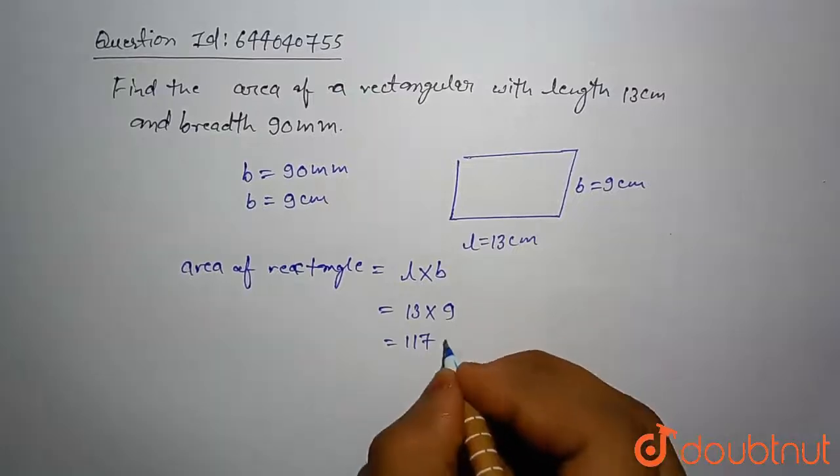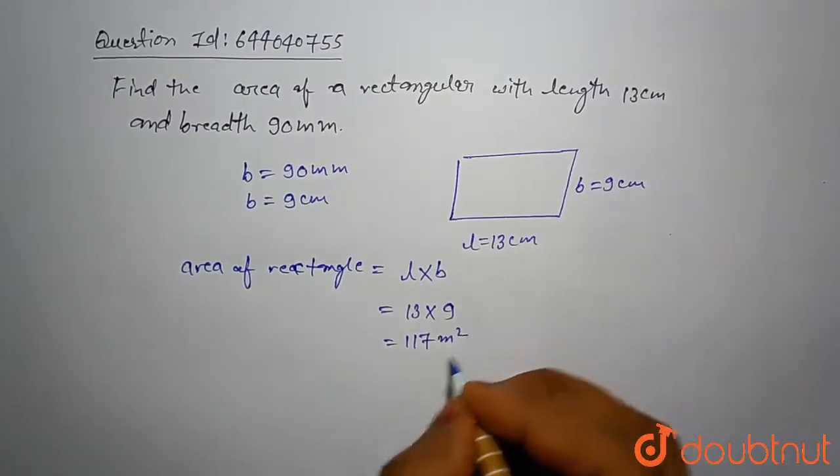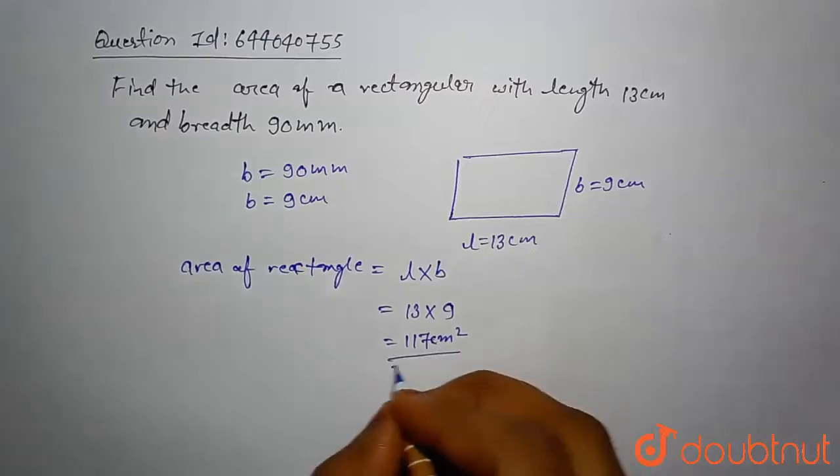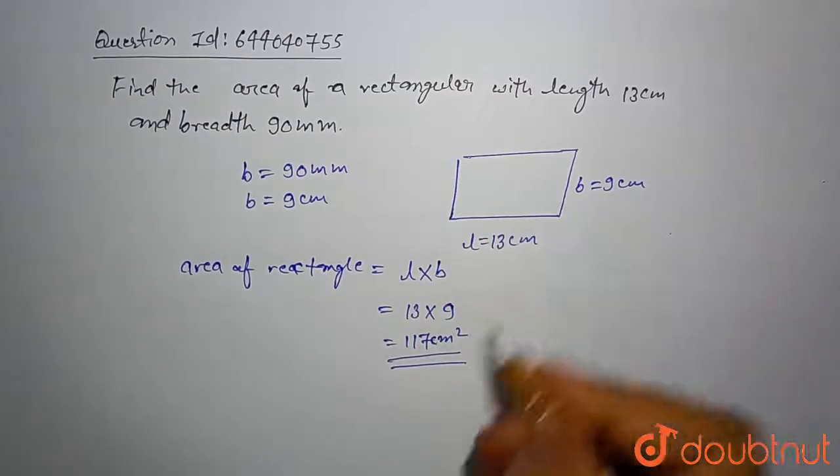117 centimeter square. This is our area of this rectangular body.